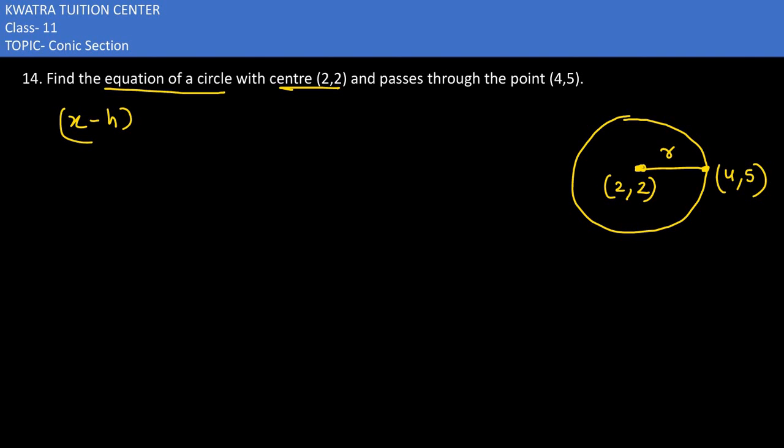With the help of h value and k value, we need to have the radius also. So h and k are already there - that's 2 and 2 - but radius we don't have. How to find out the radius?